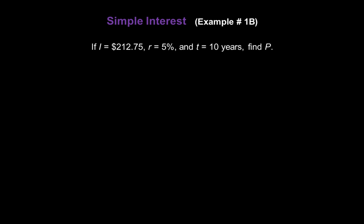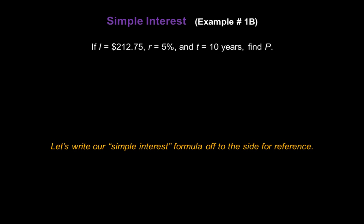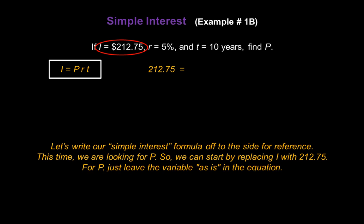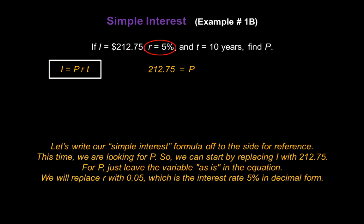Let's look at another problem. This time we have I, the interest amount — it's $212.75 — the rate is 5%, the time period is 10 years, and we're looking for the amount we start with, which is the principal. So let's write our simple interest formula off to the side for reference: I equals PRT. We're looking for P in our formula. The problem says I is $212.75, so let's start by replacing I in the formula with 212.75. We're looking for P, so we'll leave P as is. The interest rate is 5%, so let's replace R with 0.05. And the time period is 10 years, so let's replace T with the number 10.